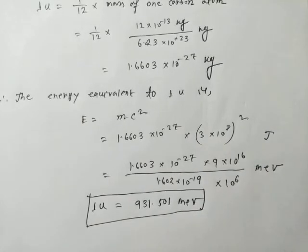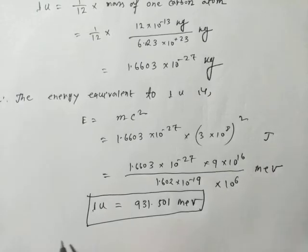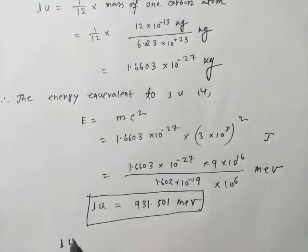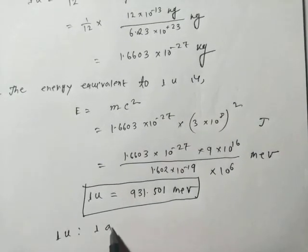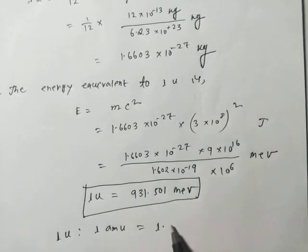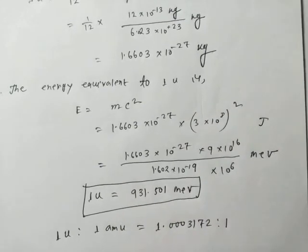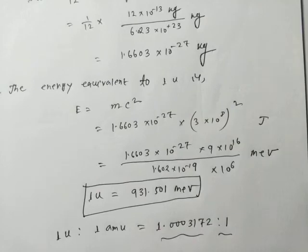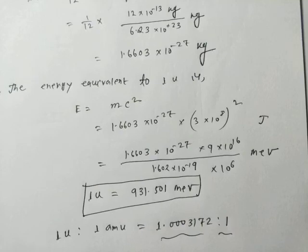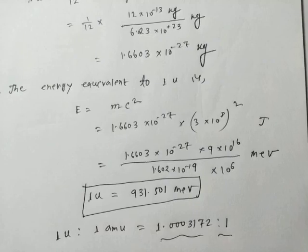There is a small difference between 1u and 1 amu. The ratio is 1.00031720 to 1. There is a slight difference between these two: the unified atomic mass unit and the atomic mass unit. So thank you.